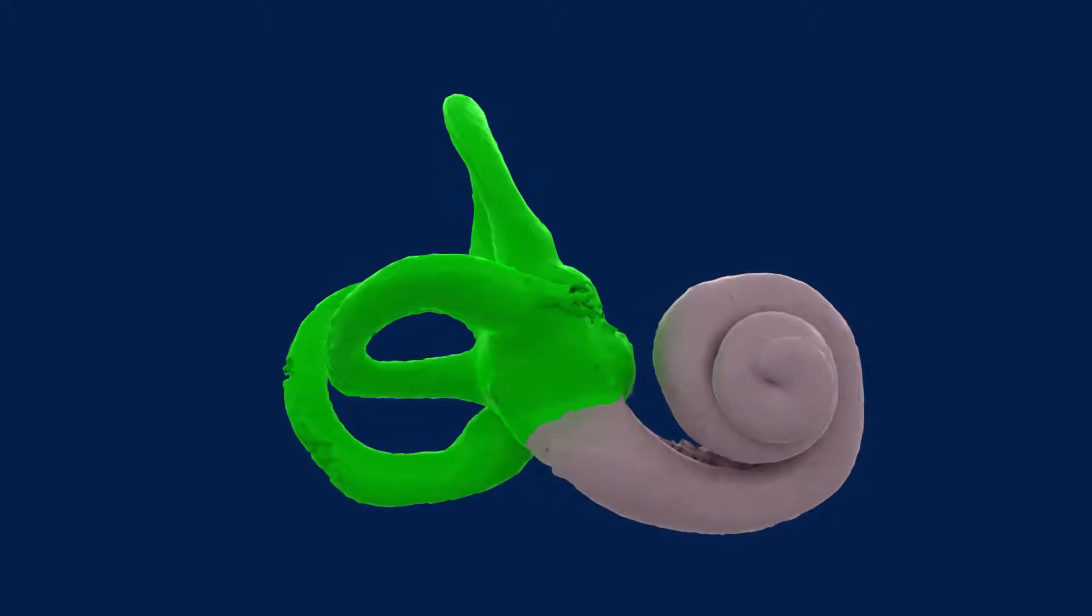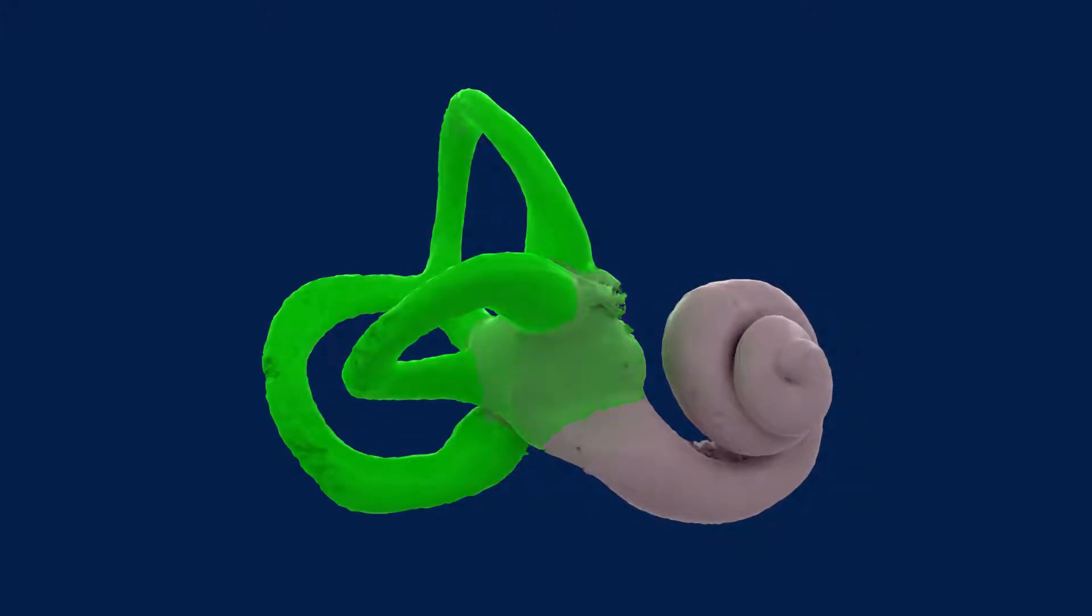The vestibular system itself can also be divided into two main parts. The semicircular canals, which sense head rotations, and the vestibule, which senses orientation and linear movements.